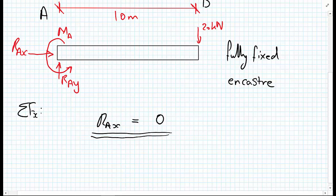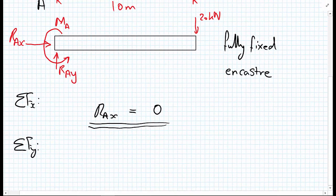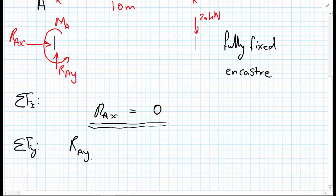So sum of the forces in the Y direction. I can see that on the left hand side I have R_AY pointing upwards, and on the right hand side I have my 20 kilonewtons pointing downwards.